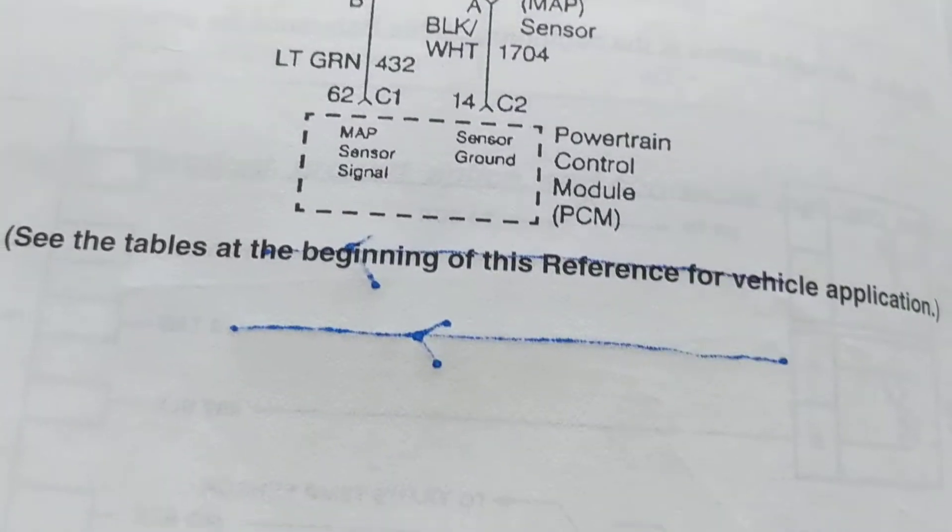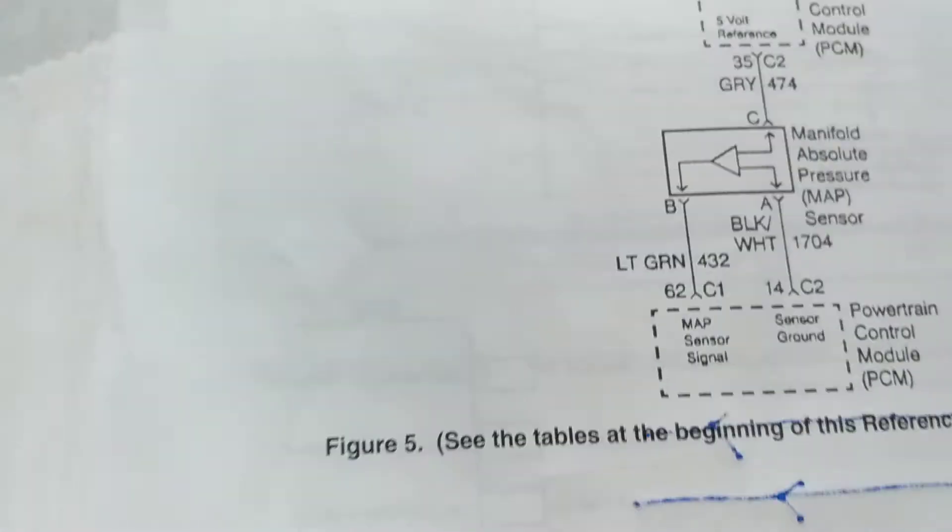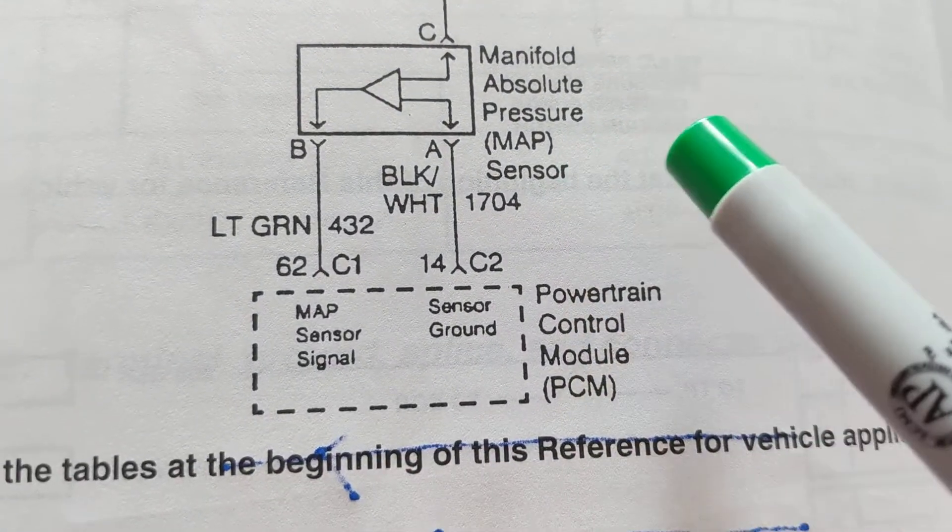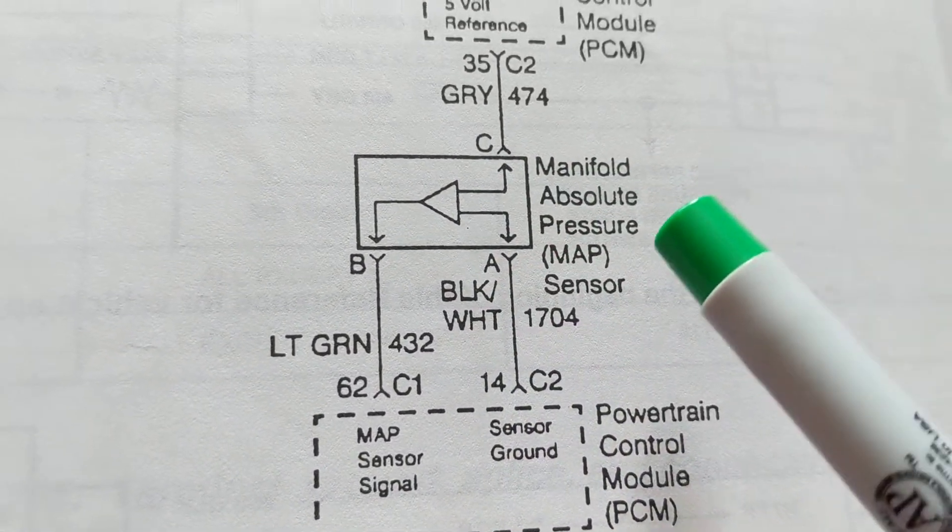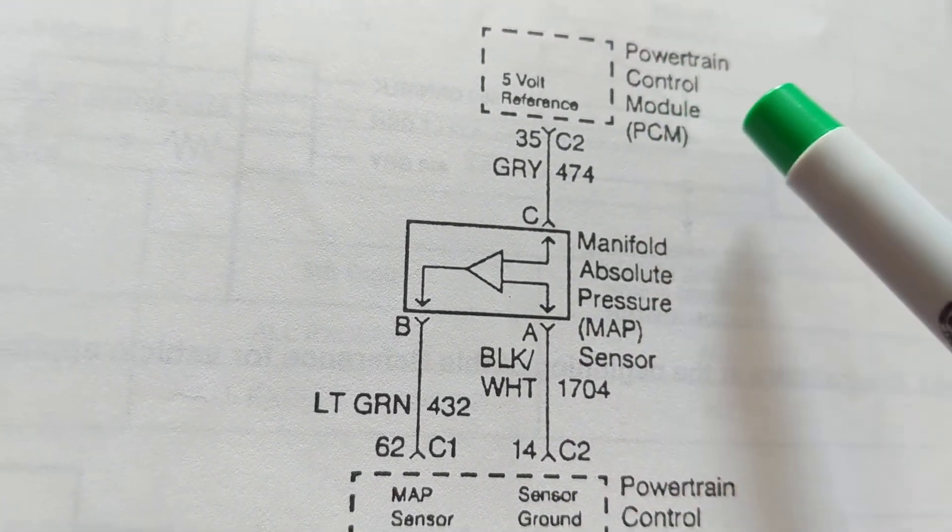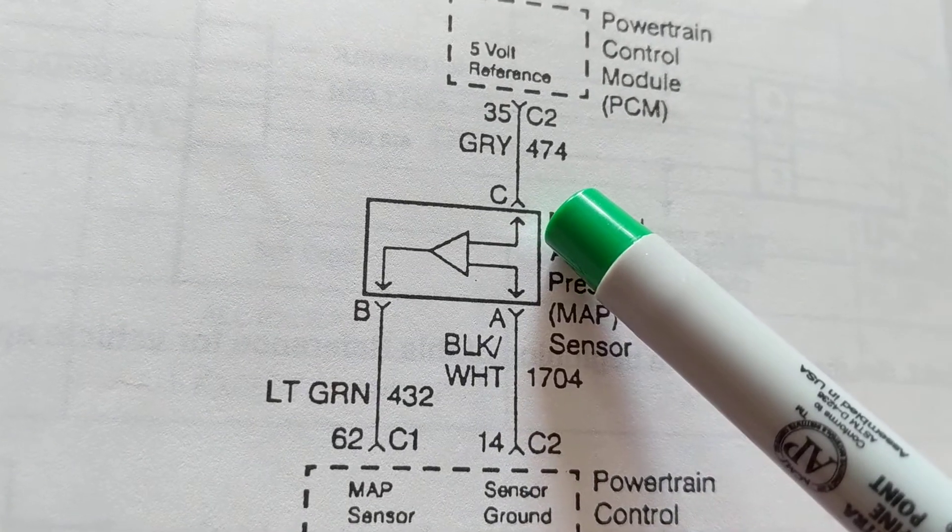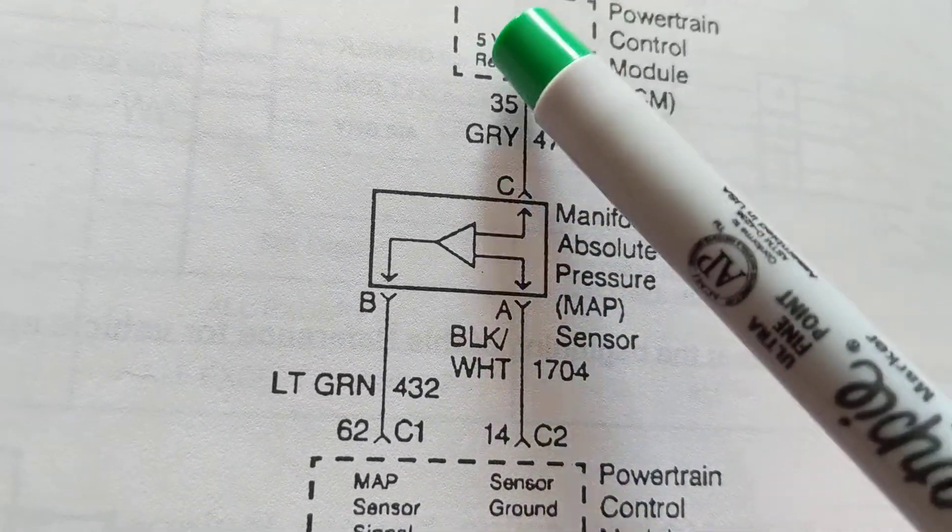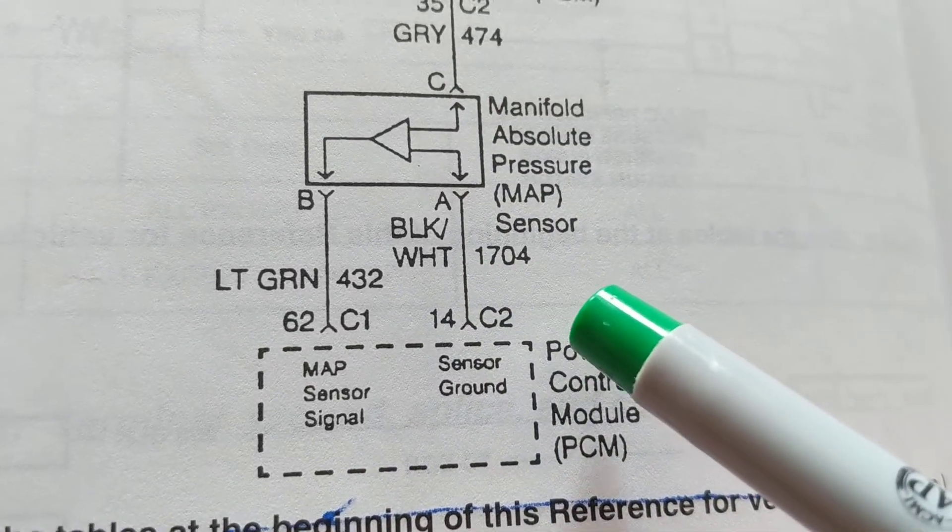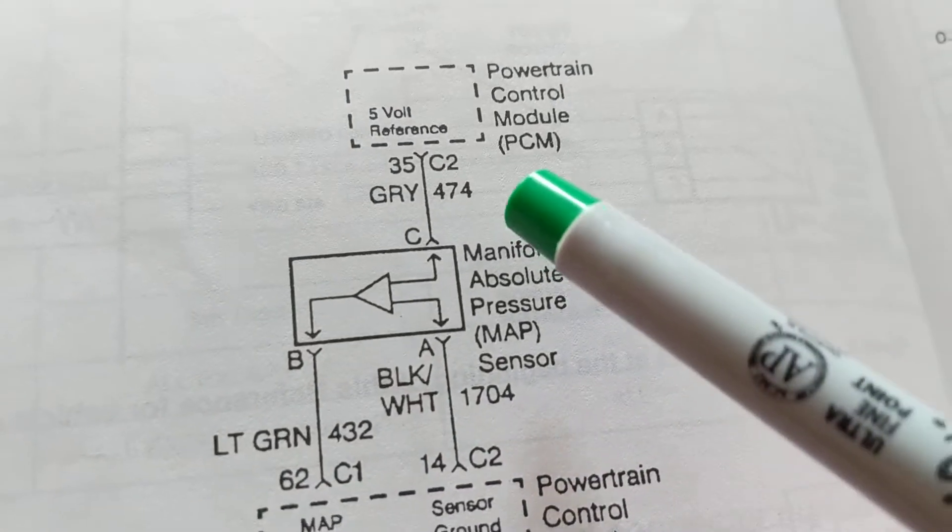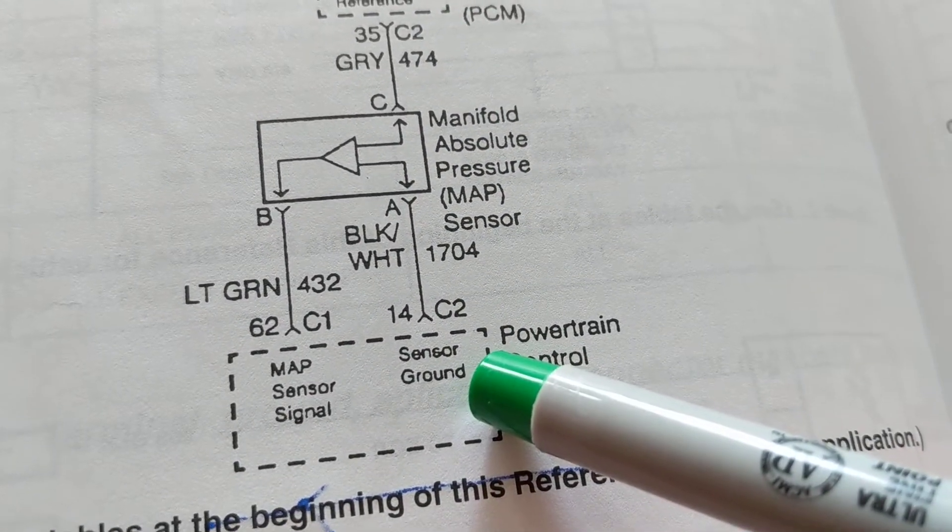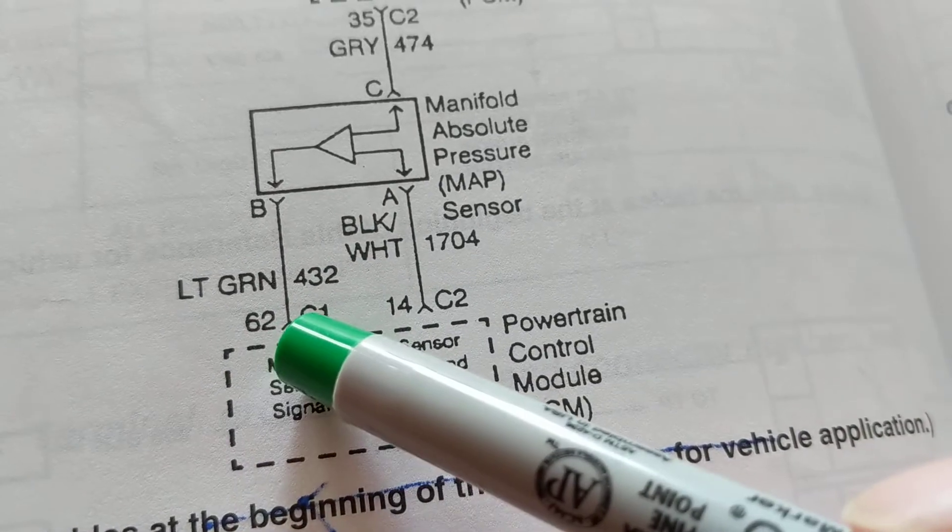Let's get to the next one. Same thing, schematic-wise. Manifold absolute pressure. Now where is this information going to? We just said this is going to - the PCM has to give this a voltage. In this case a five volt reference, right? And also it's giving it a ground.